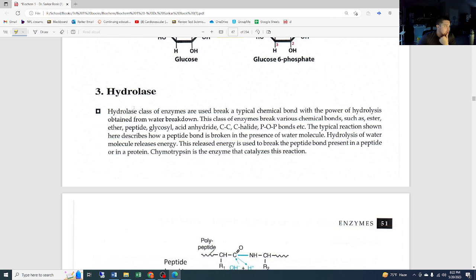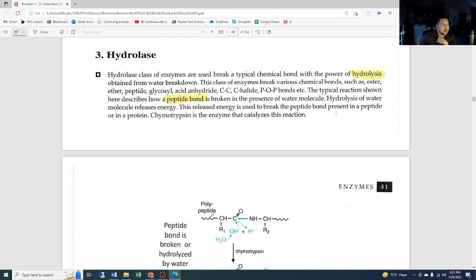Now we get into the hydrolase. The hydrolase class of enzymes are used to break a typical chemical bond with the power of hydrolysis obtained from water breakdown. This class of enzyme breaks various chemical bonds such as ester, ether, peptide, glycosyl, acid anhydride, C-C, C-halide, phosphorus-oxygen, phosphorus bonds, etc. The typical reaction shown here describes how a peptide bond—remember, we're talking about peptides, amino acid chains, proteins—is broken in the presence of a water molecule. Hydrolysis of water molecule releases energy.